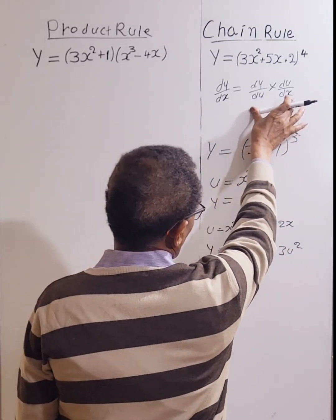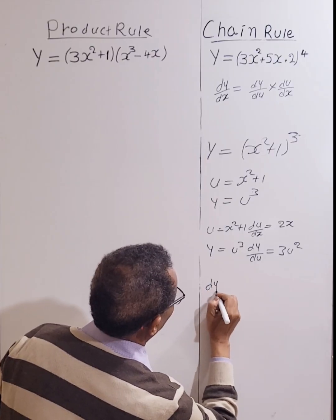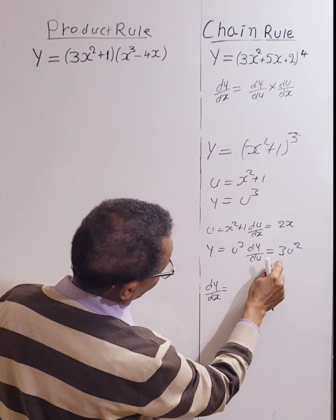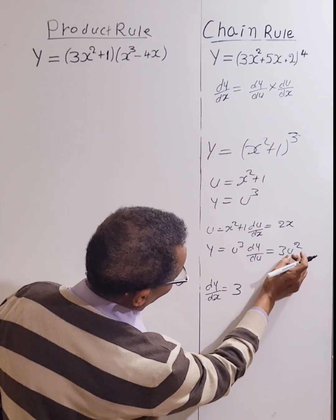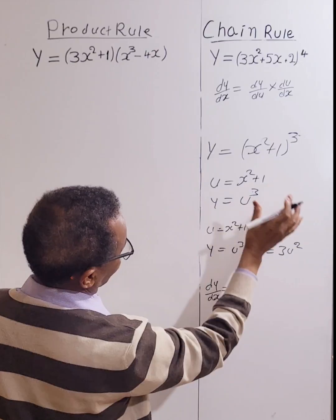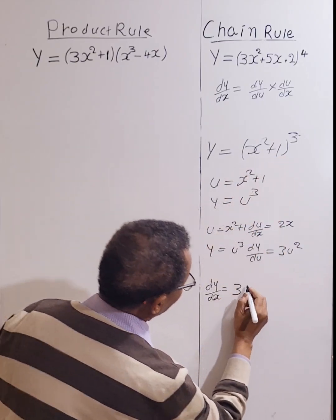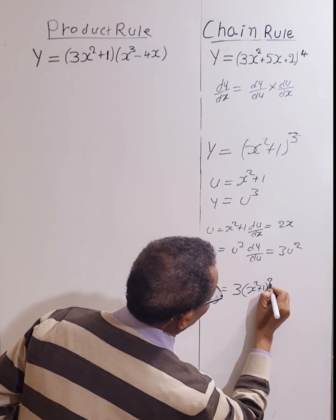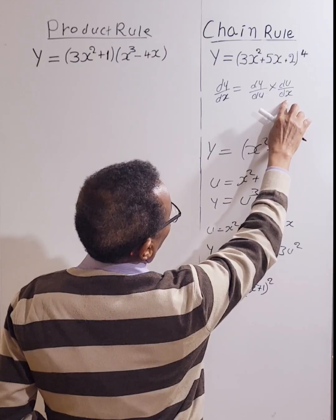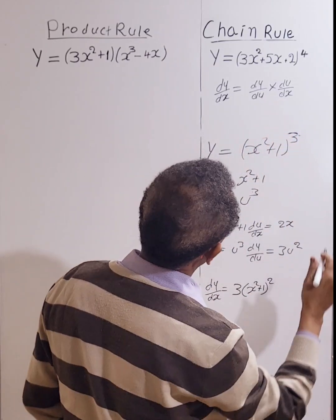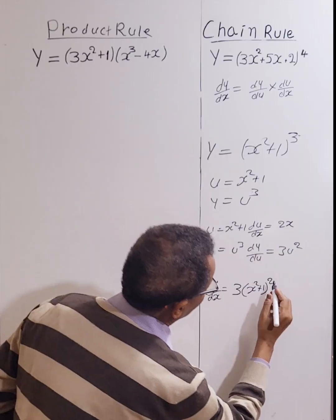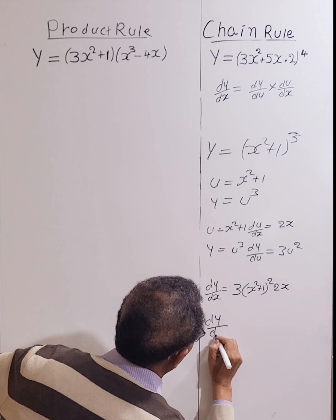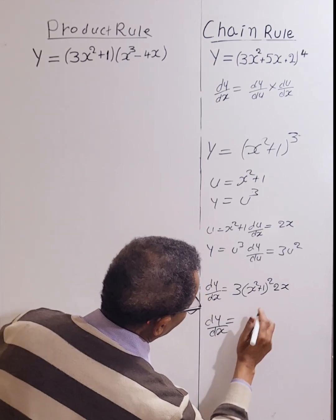Now let's apply this. dy/dx equals dy/du, which is 3, times the inner function substituted in — so (x² + 1)² — times du/dx, which is the derivative of the inner function, which is 2x. So dy/dx equals 6x(x² + 1)².